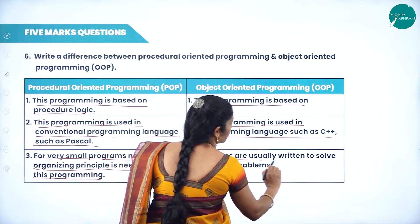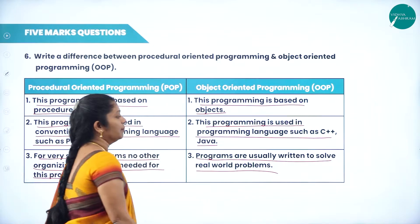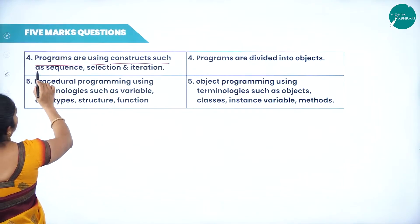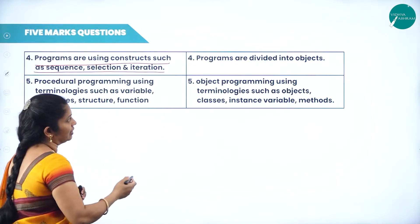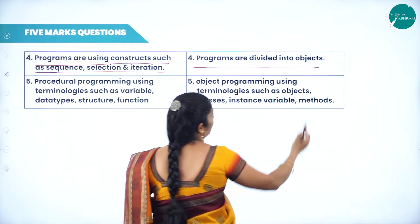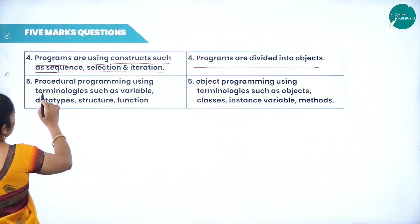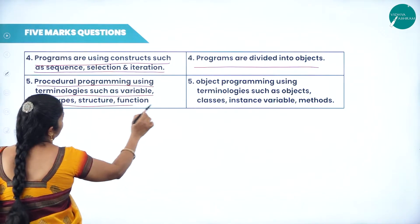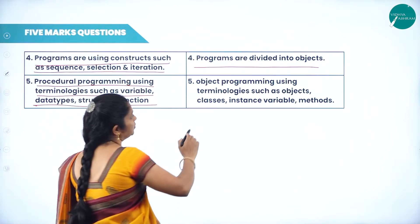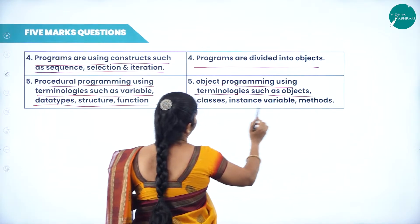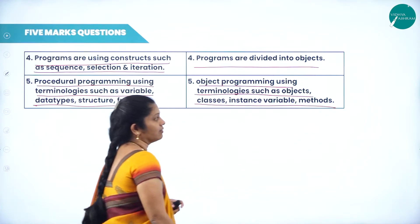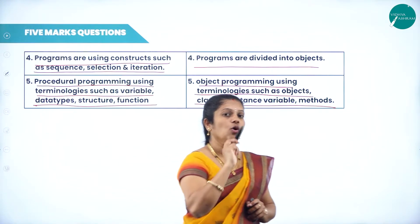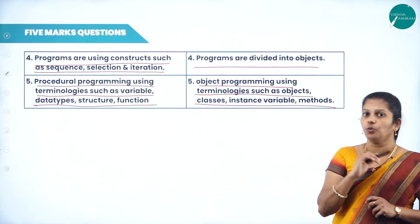Procedural programming uses constructs such as sequence, selection, and iteration. In OOP, we can divide the main program into sub-programs and objects to solve problems. Procedural programming uses terminologies such as variables, data types, structures, and functions. Object-oriented programming uses terminology such as objects, classes, instance variables, and methods. By this, we can differentiate procedural programming from object-oriented programming. This question may be expected for 5 marks.